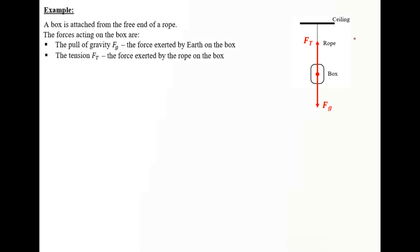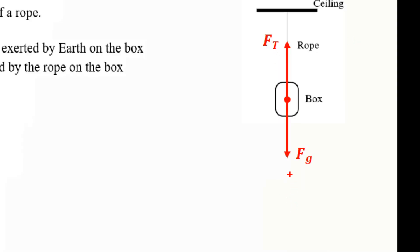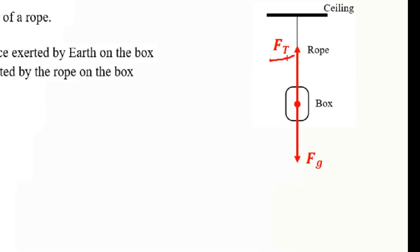Consider a box attached to the free end of a rope. The forces acting on the box are the pull of gravity, the force exerted by Earth on the box, and the tension, the force exerted by the rope on the box. You might claim that tension and pull of gravity are an action-reaction pair — this is completely wrong. Although opposite in direction and equal in magnitude, they act on the same body. They should act on two different bodies and be of the same type: tension is a contact force, while the pull of gravity is action at a distance.